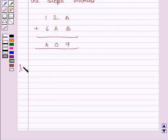Let us now move on to the solution. First of all, we will rewrite the given puzzle. That is 12A plus 6AB gives A09.